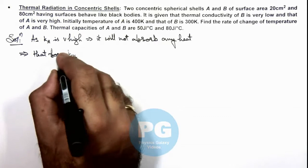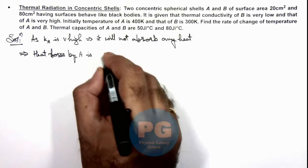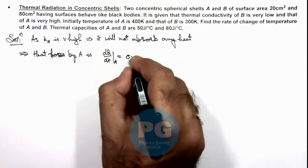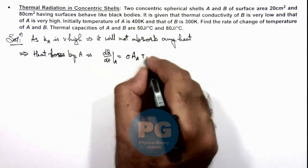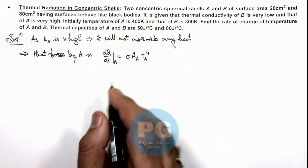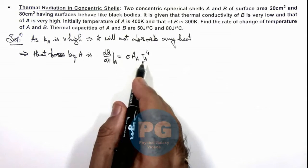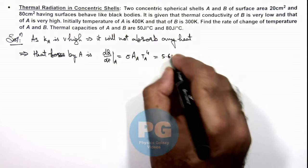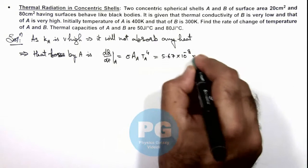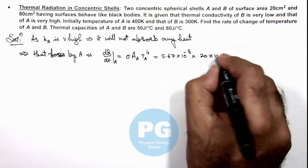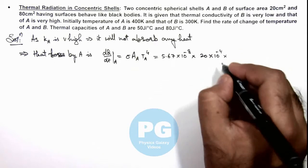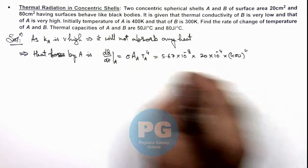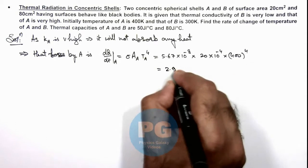The heat loss by A, dQ/dt for A, equals sigma multiplied by the area of A multiplied by T_A to the power 4. Numerically, this is 5.67 × 10⁻⁸ multiplied by area of A which is 20 × 10⁻⁴ m², multiplied by 400 to the power 4. Numerically, this value comes out to be 2.9 joules per second.